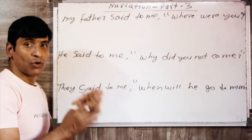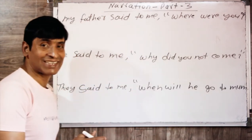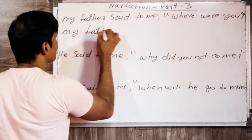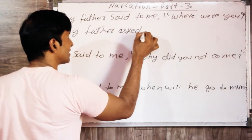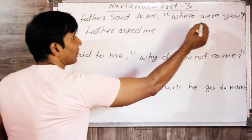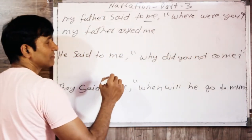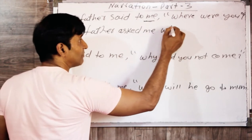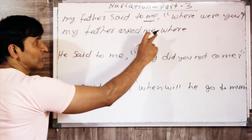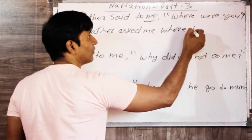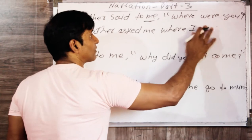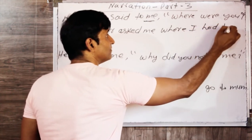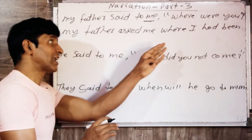For WH-question sentences — 'where were you' type questions — we use the WH-word as a link. My father asked me where I had been. The WH-word 'where' comes first, followed by the subject 'I', and the tense shifts to past perfect: My father asked me where I had been.